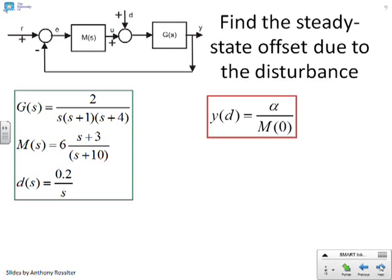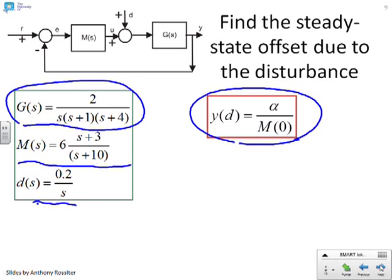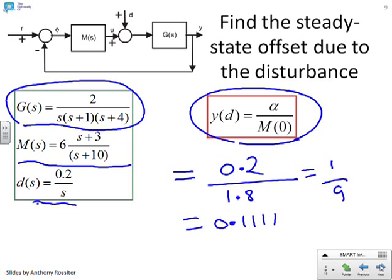Here's an example to demonstrate it. So you'll see I've put an integrator in the process. There's G of S. M of S is just a lead compensator. And there's my disturbance 0.2 over S. And what I've said is the steady-state output offset due to the disturbance is given by alpha over M of 0. So let's work out what this will be. For this case, it's going to be 0.2 over M of 0 is 1.8, which gives you 1 over 9, which is 0.1111 and so on. What we're going to do on the next slide is do the closed loop simulation for this loop and see what you get.